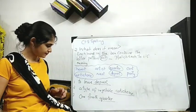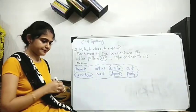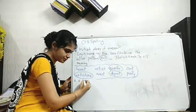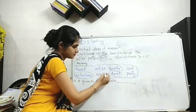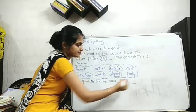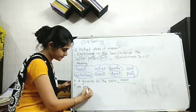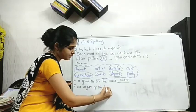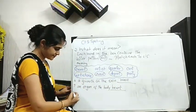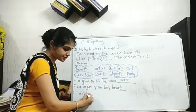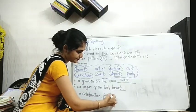Next one. Pause the video and copy down. Number four: a growth on the skin. You know what is it called? Wart. W-A-R-T, done. Number five: an organ of the body. It's heart, right? Number six: a celebration can relate with party - celebration party, right?